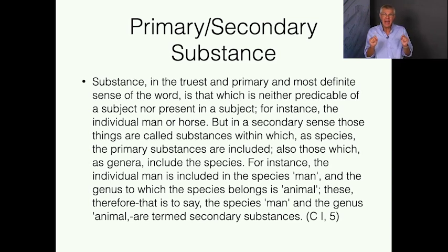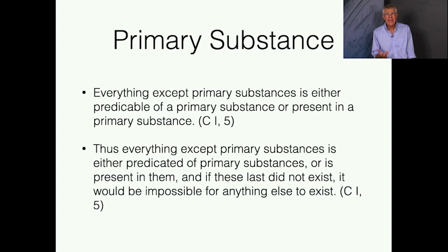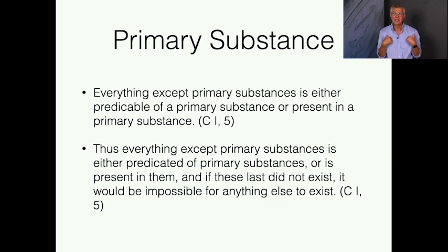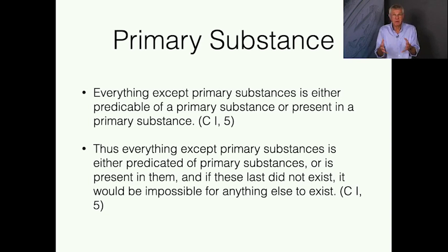We can predicate things of the species man or of the genus animal just as easily as of an individual person like Socrates. A primary substance is what most of our discussion is about — we talk about particular things and particular people. Everything else is either predicable of a primary substance or present in a primary substance. The kind is something predicable of a primary substance: I am a human being attributes to me being a member of that kind. A secondary substance can be predicated of a primary substance, or even of other sub-kinds — 'professors are human beings' attributes that kind to another kind. So kinds can be both subjects and predicates. That's part of what makes them secondary.